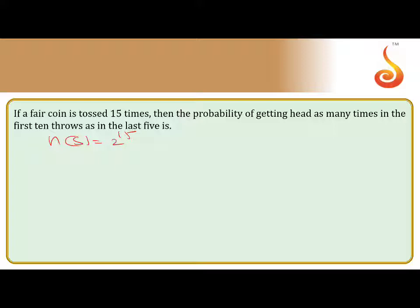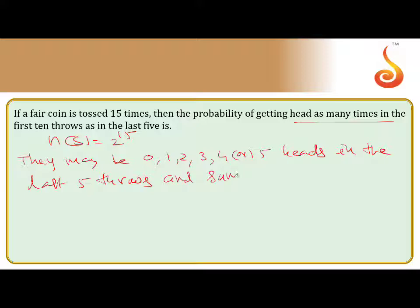Now we are going to take the other case. That means probability of getting heads as many times in the first 10 throws as in the last 5. So here they may be 0 heads, 1 head, 2 heads, 3 heads or 5 heads. We can take the same from the first 10 throws and the last 5. So number of favorable cases.